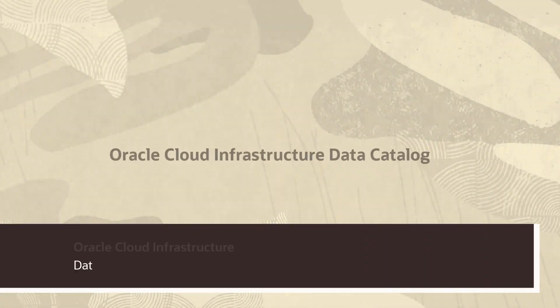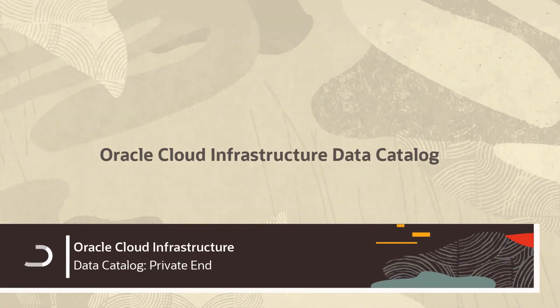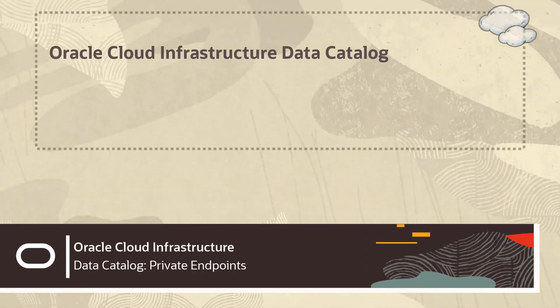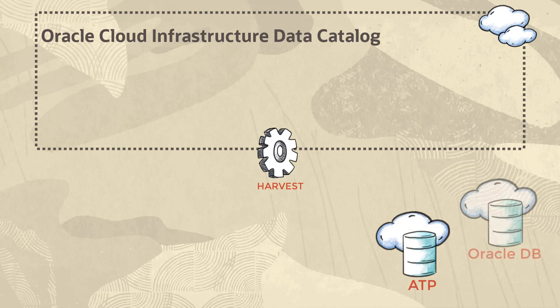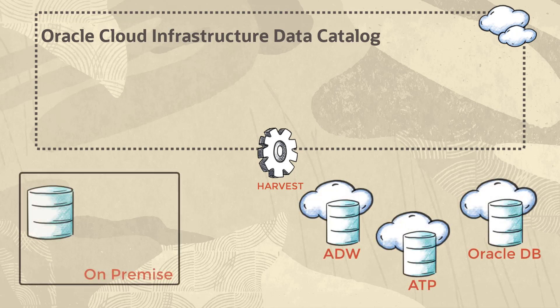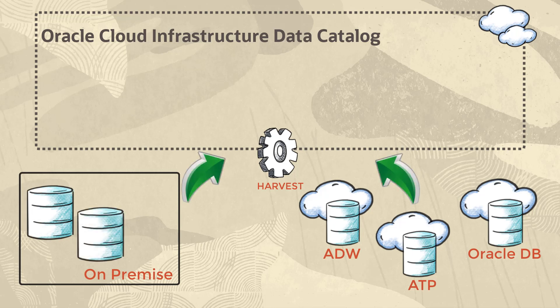Oracle Cloud Infrastructure Data Catalog lets you harvest technical metadata from different Oracle Cloud Infrastructure data sources and on-premise data sources to enable efficient data discovery and governance.